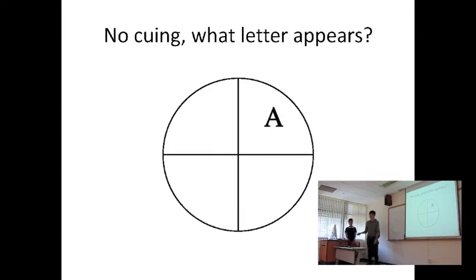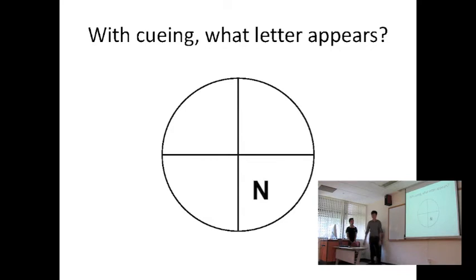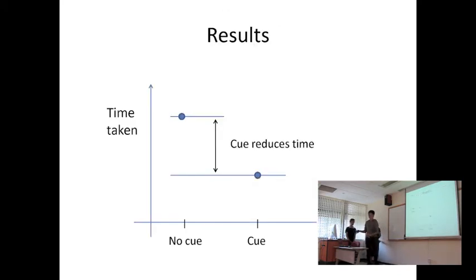So moving on to the second condition with cueing. That dot there is your cue. That dot indicates that the next target object, another alphabet, will appear in the bottom right quadrant. So same thing, when you identify it, you say it out. And I know this experiment looks very lame, but Posner carried out a series of these experiments. Thanks Victor.